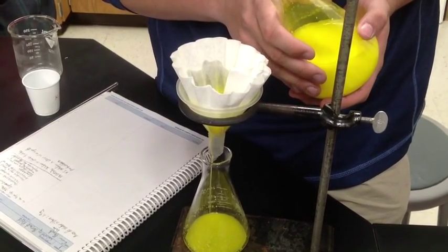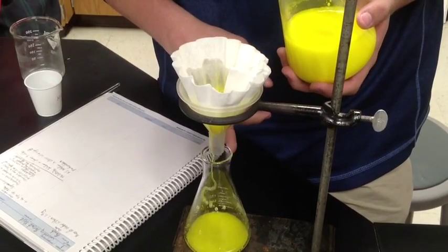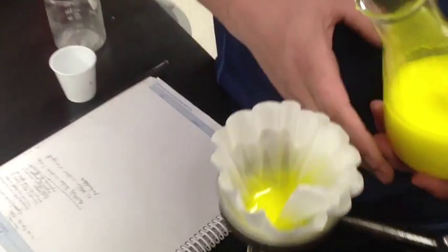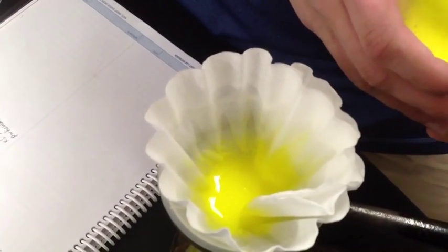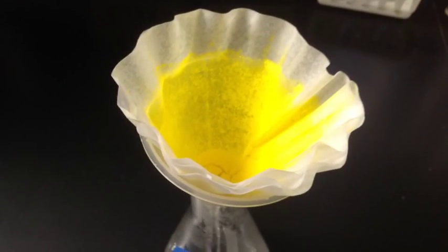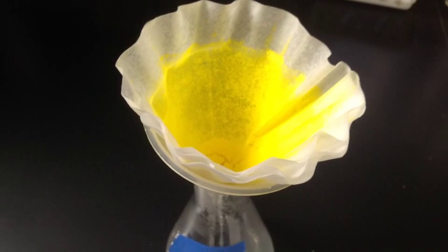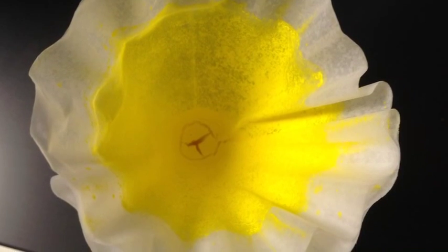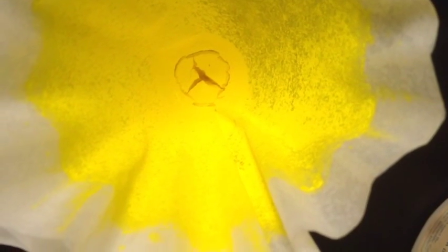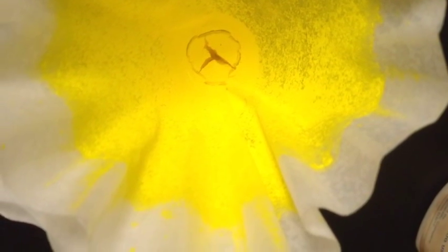We will take the lead iodide which we are collecting in the filter paper, and as we see here the filtrate is forming. We will then dry that filter paper over a 48 hour period. At the end of 48 hours we will weigh it, gather our actual yield of lead iodide, and compare it to the theoretical yield we calculated.